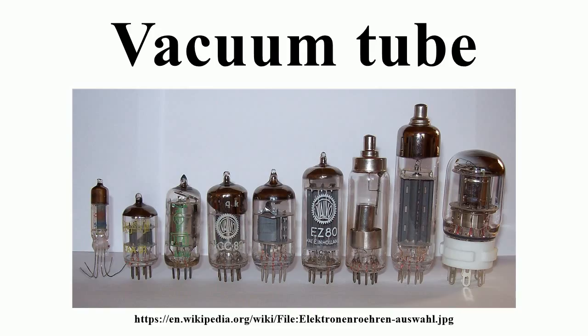One classification of vacuum tubes is by the number of active electrodes. A device with two active elements is a diode, usually used for rectification. Devices with three elements are triodes, used for amplification and switching. Additional electrodes create tetrodes, pentodes, and so forth, which have multiple additional functions. Other classifications are by frequency range, by power rating, by cathode filament type and warm-up time, by characteristic curves design, and by application.